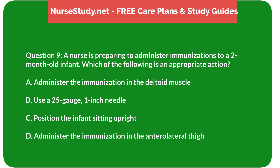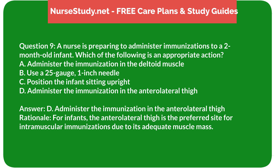Question 9: A nurse is preparing to administer immunizations to a 2-month-old infant. Which is an appropriate action? A) administer in the deltoid muscle, B) use a 25-gauge 1-inch needle, C) position the infant sitting upright, D) administer in the anterolateral thigh. Answer: D) administer in the anterolateral thigh. Rationale: For infants, the anterolateral thigh is the preferred site for intramuscular immunizations due to its adequate muscle mass.